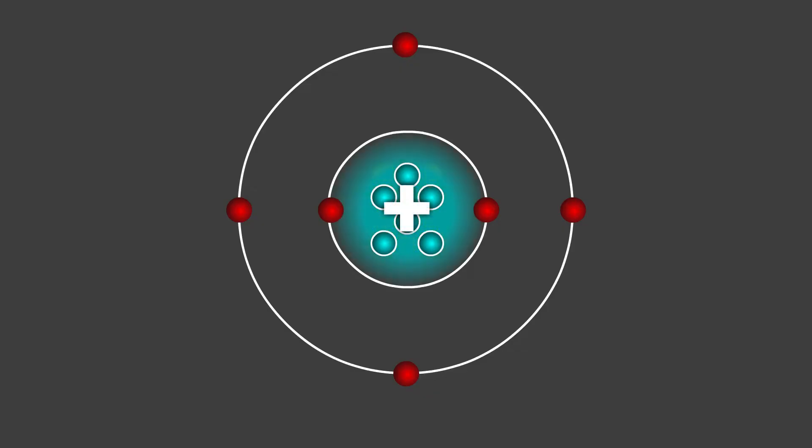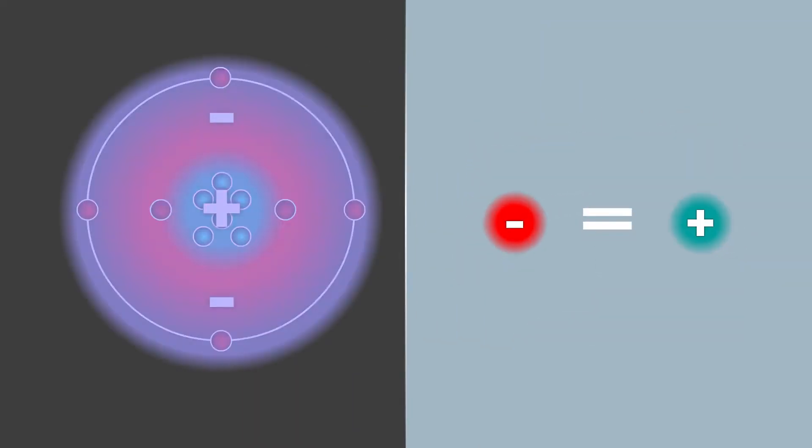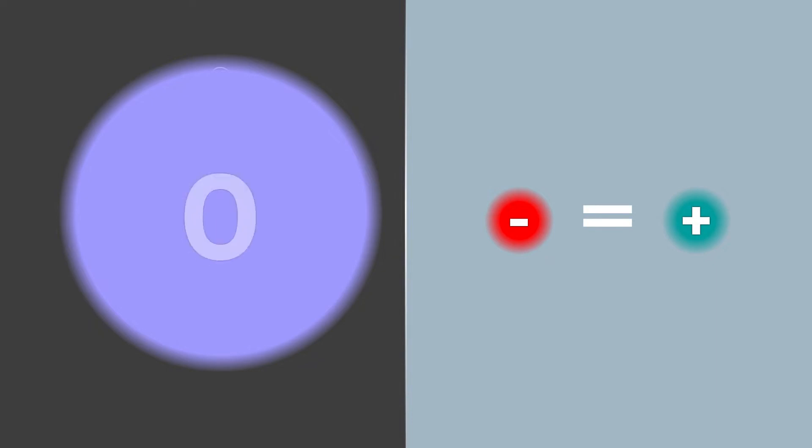The atom's protons account for the positive charge and the electrons for the negative charge. In a stable condition, these charges balance each other out. Within the atom, the net electric charge is zero. For each positive proton, there will be one negative electron.